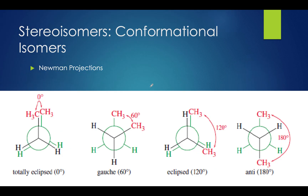Let's start with conformational isomers. As I said in the last video, conformational isomers are isomers with the same molecular formula and can be converted between each other through the rotation of single bonds. These rotations can be visualized by Newman projections, which are used to show straight chain conformations.